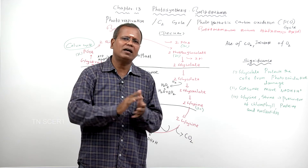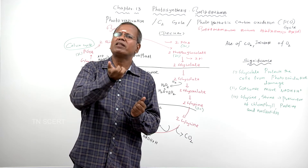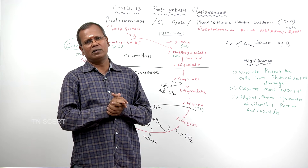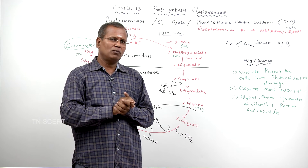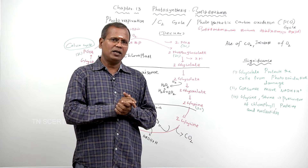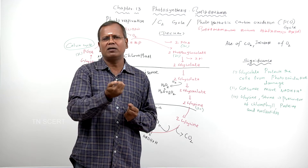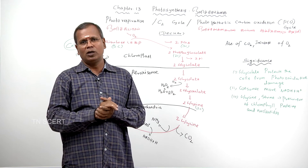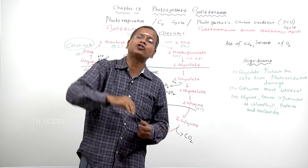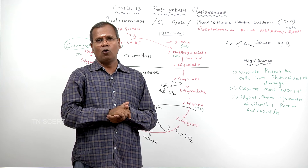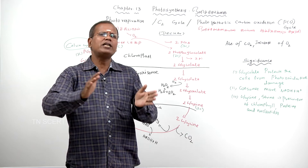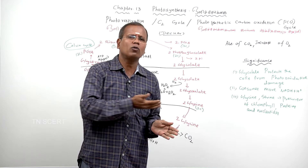When atmospheric carbon dioxide is very low and oxygen is relatively higher, in the presence of light with less carbon dioxide, it leads to photo-oxidative damage. To prevent this photo-oxidative damage, the plant undergoes this C2 cycle — photorespiration.